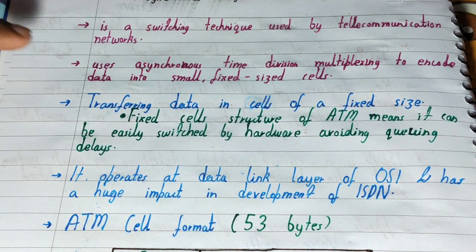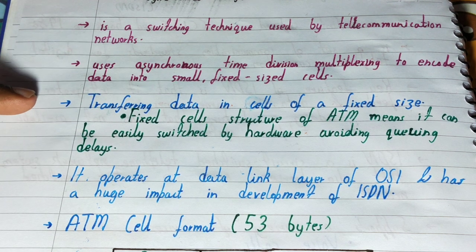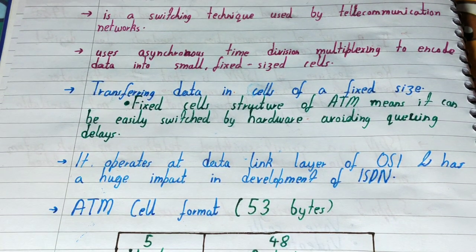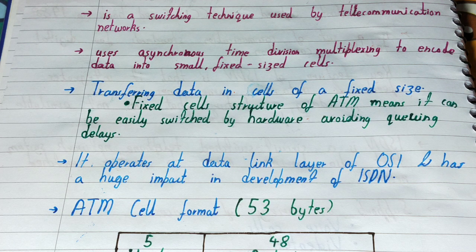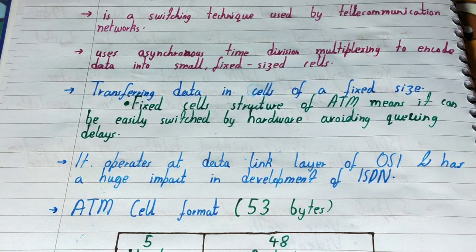ATM makes use of asynchronous time division multiplexing to encode data into small, fixed-size cells. It converts data into equally sized fixed packets. If data sizes were irregular — some packets too big, some small — there would be queuing delays, because small packets would wait for large packets to be delivered. To solve this, ATM uses equal-sized packets so there is no queuing delay, and the fixed cell structure allows data to be easily switched by hardware.